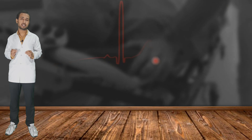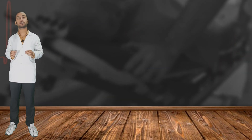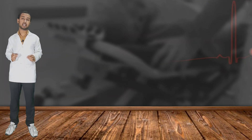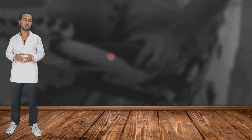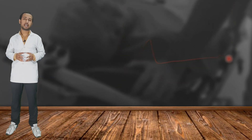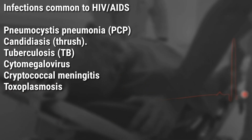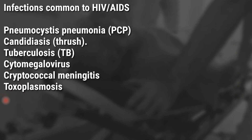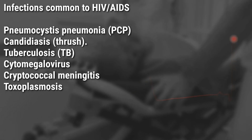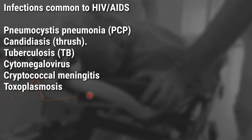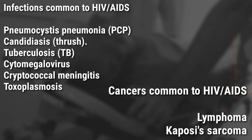While in the case of AIDS, the person suffers from lots of infections or even cancer at the same time. The common infections that occur during AIDS are Pneumocystis pneumonia, Candidiasis, Tuberculosis, Cytomegalovirus, Cryptococcal meningitis, and Toxoplasmosis.